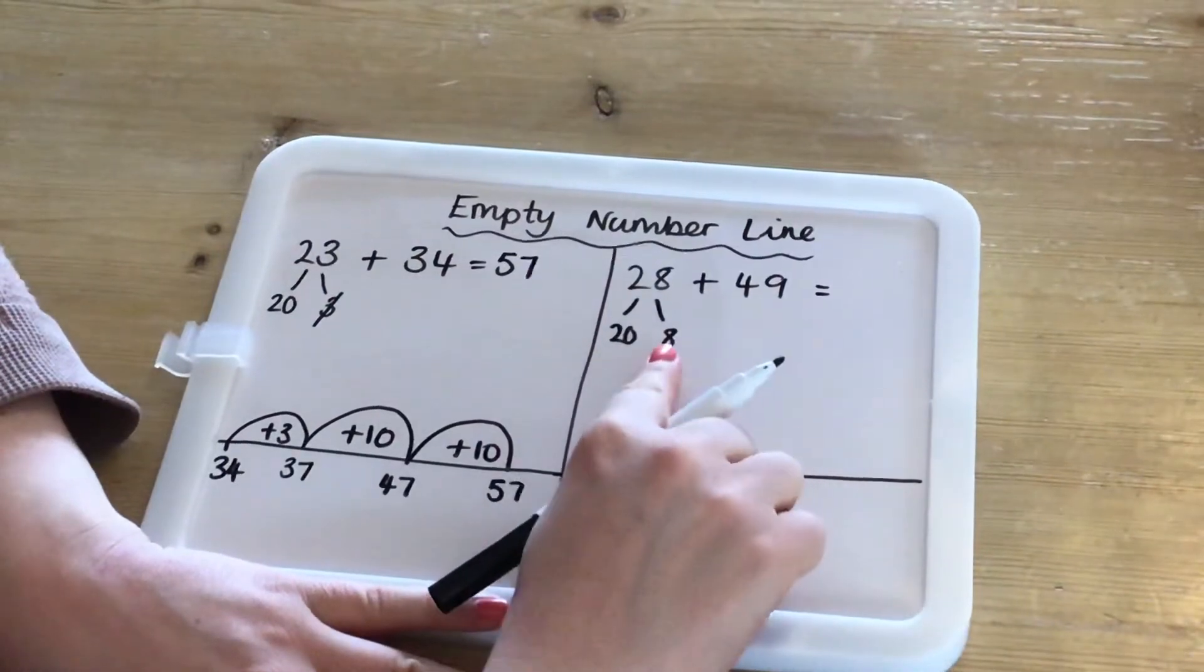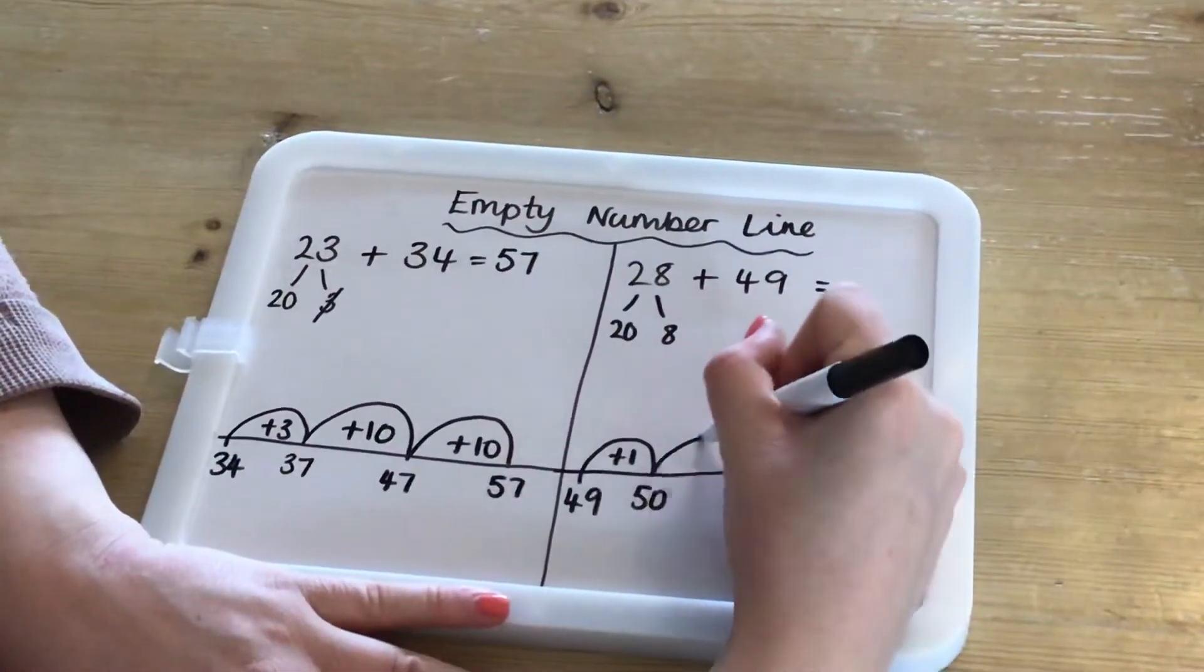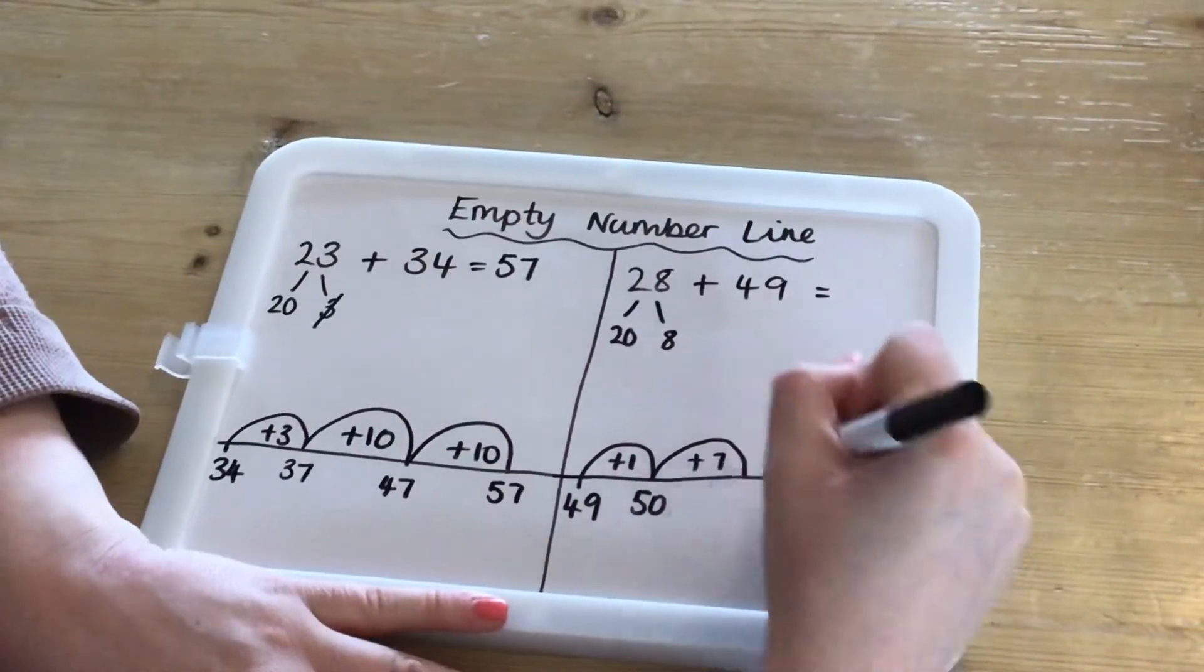And then we're going to add what's left of the 8. So, if we've already added 1, we need to add another 7. So, we can do that mentally and that's 57.